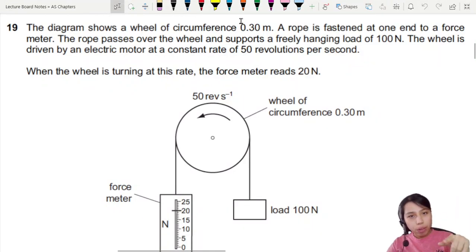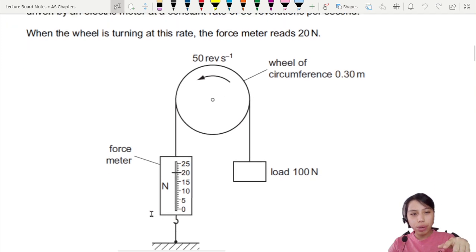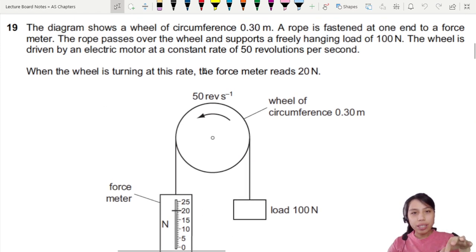The diagram shows a wheel of circumference 0.3 meters. A rope is fastened at one end to a force meter and passes over the wheel, supporting a freely hanging load of 100 newtons.